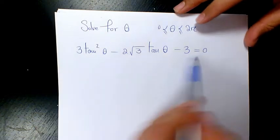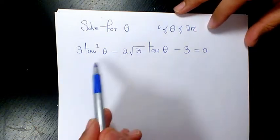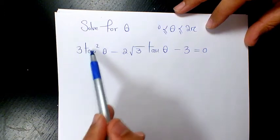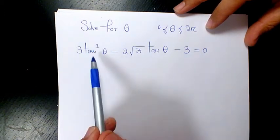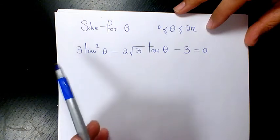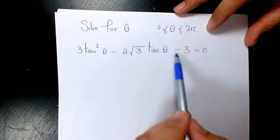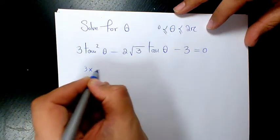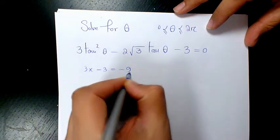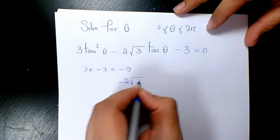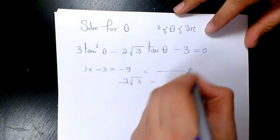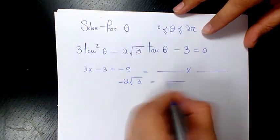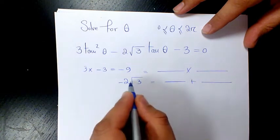So how are we going to approach this? As you can see, this is basically like a quadratic equation. If you imagine instead of tan theta I have x or y, that's going to be a quadratic equation. Solving it, we have three here and negative three here, so three times negative three is negative nine, and here we have negative two root three. So we are looking for two expressions that multiply to negative nine and add to negative two root three.